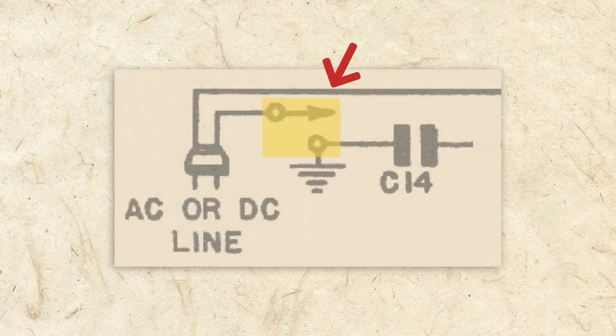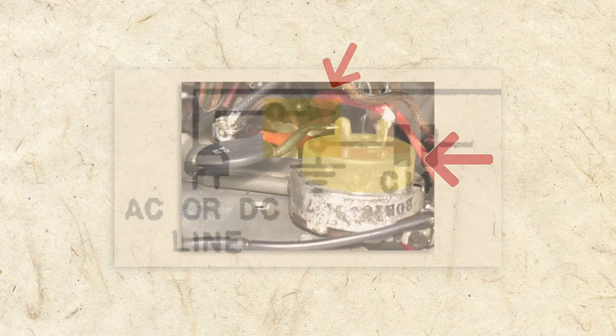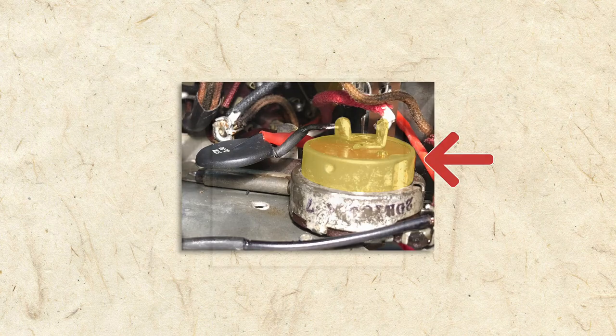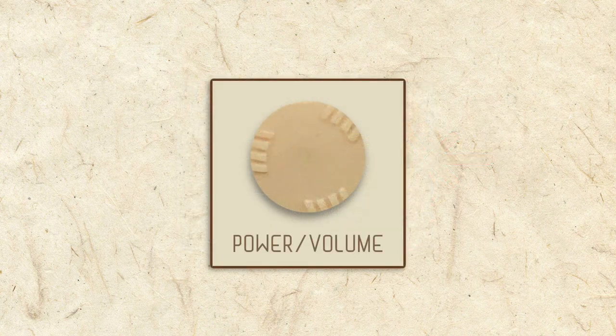Notice, too, that the on-off switch for the radio is piggybacked to the volume control, so one knob can serve both functions.